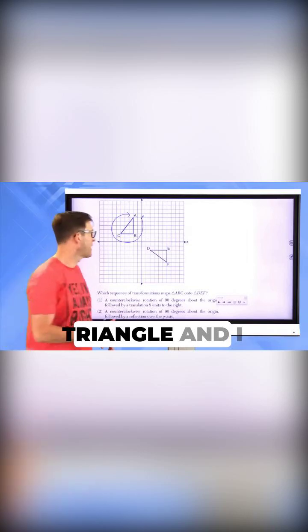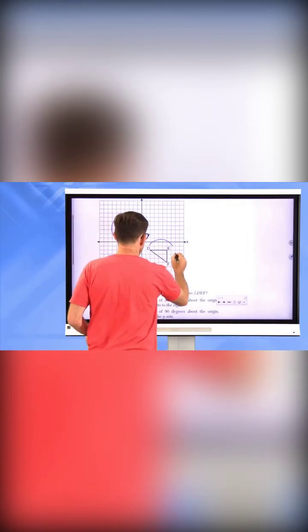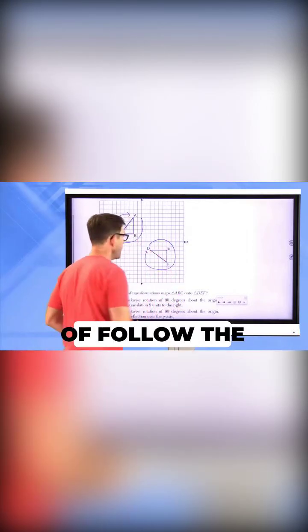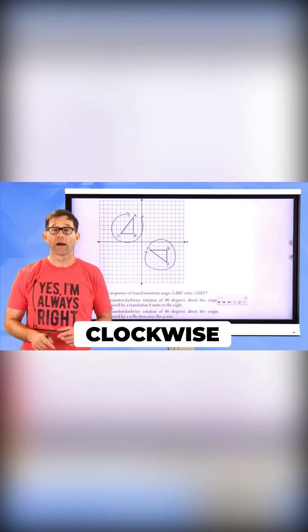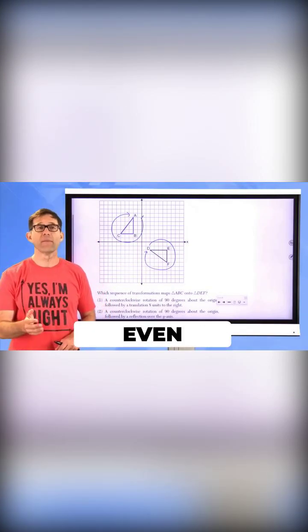If I look at this triangle and I go DEF, right, and I kind of follow the alphabet, they also go around in a clockwise direction. Now, why am I even mentioning this?